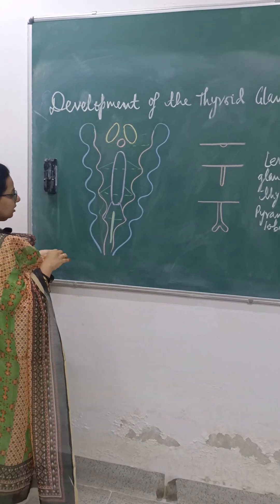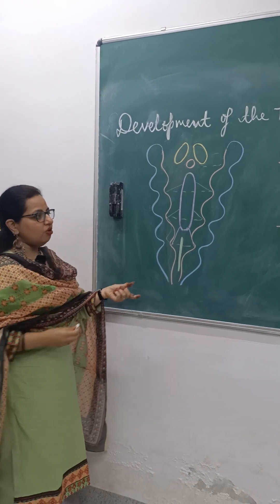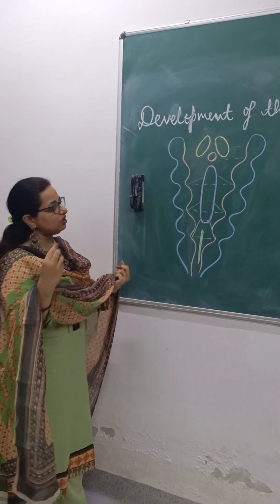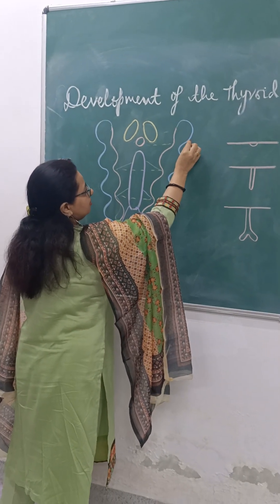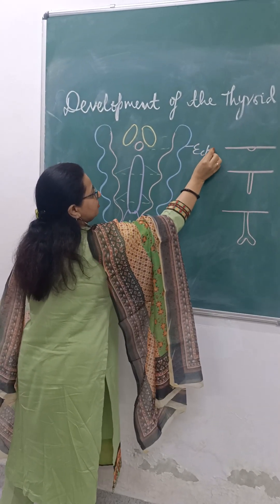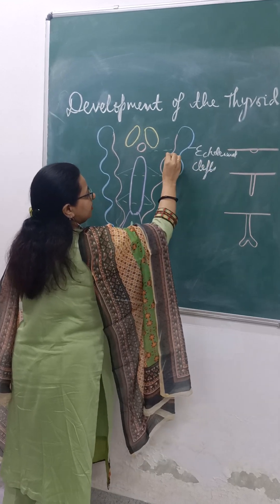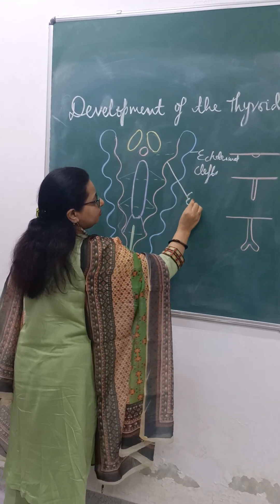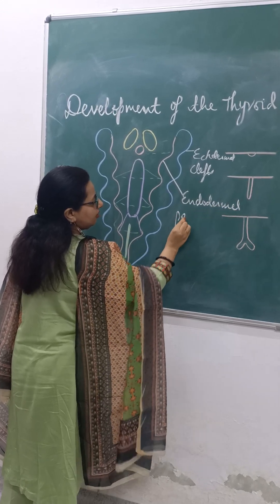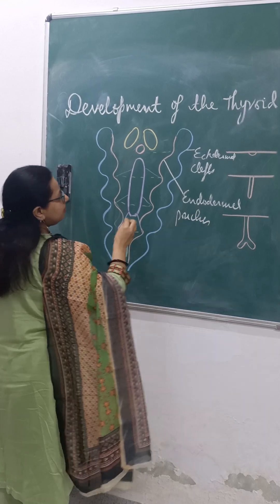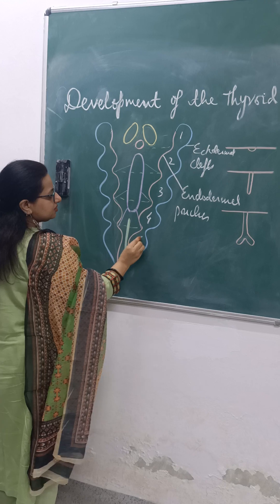You are already familiar with this diagram. This is the coronal section of the pharynx where you can appreciate the pharyngeal arches with the ectodermal clefts and endodermal pouches. So this is the first arch, second, third, fourth, and sixth arches.